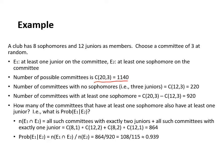The number of committees with no sophomores — meaning just three juniors — is C(12,3) which is 220. The number of committees that have at least one sophomore is C(20,3) minus C(12,3), which is equal to 920. So we compute the number of committees with at least one sophomore by subtracting the number of committees with no sophomores from the total number. We've seen the application of this rule in counting before.